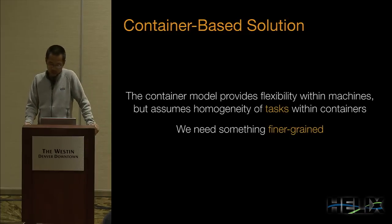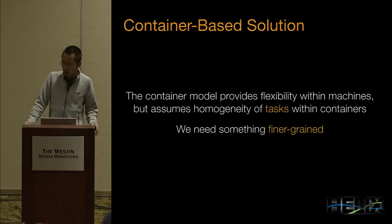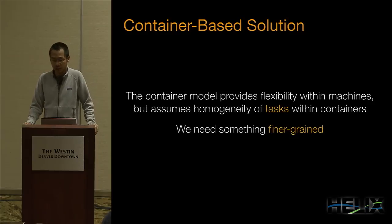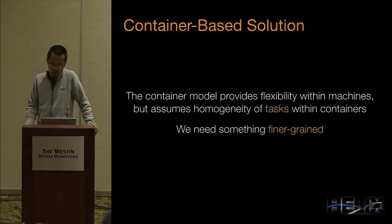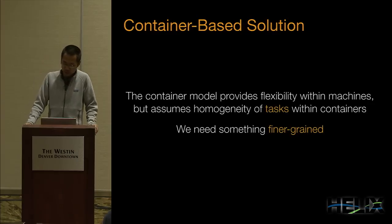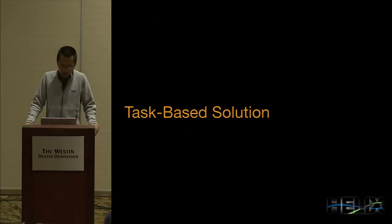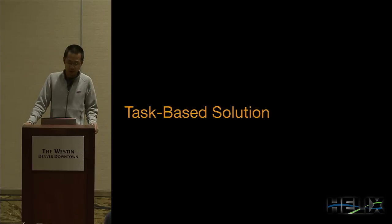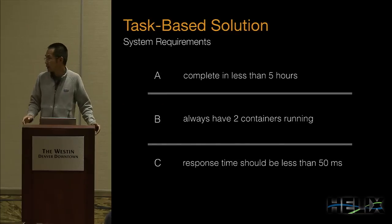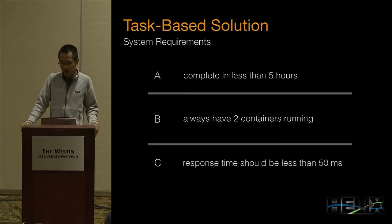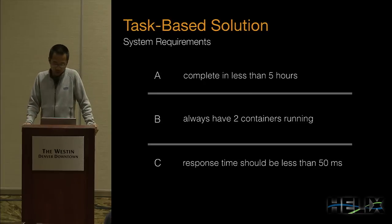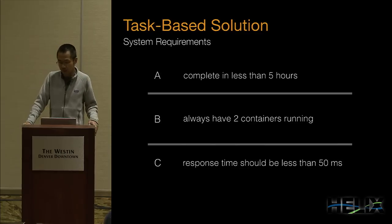The container model provides flexibility within machines, but within each container the workload is more or less homogeneous, and the container doesn't know the types of applications running inside. There's no concept of roles or states associated with these applications. We need something like fine-grained scheduling. Instead of specifying physical resource requirements, we should specify real application requirements — for example, A should complete in less than five hours, B should always have two containers running, and C should have a response time less than 50 milliseconds.